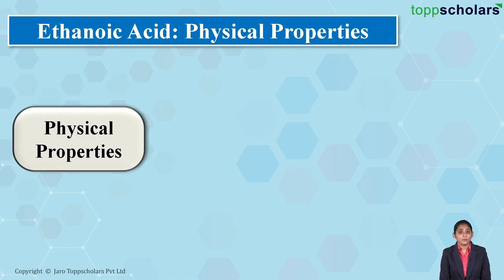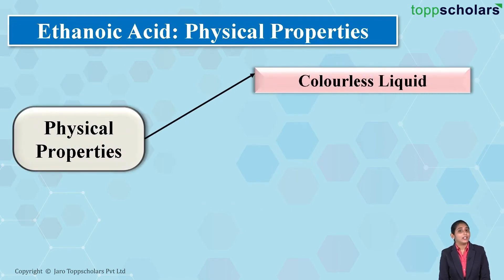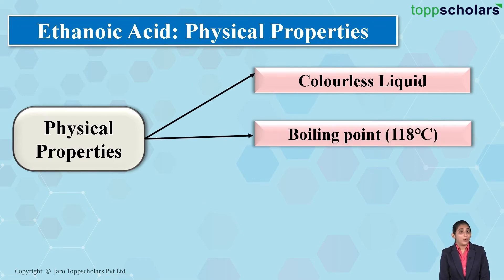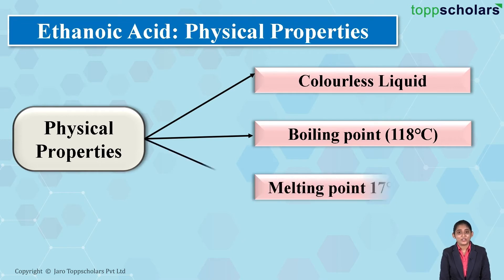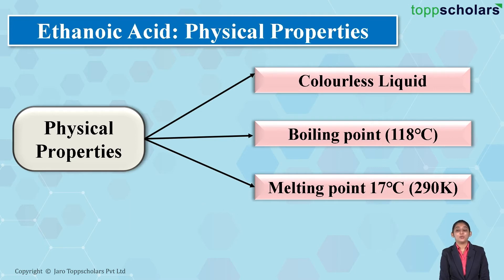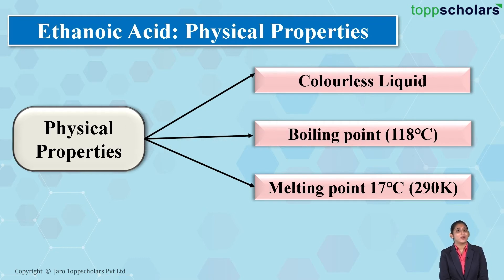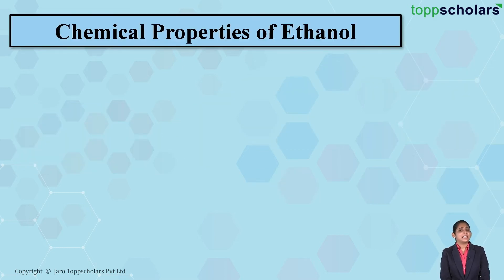Now let's discuss the physical properties of ethanoic acid. Ethanoic acid is a colorless liquid. Its boiling point is 118 degrees Celsius, and the melting point is 17 degrees Celsius, that is about 290 Kelvin. Anhydrous ethanoic acid on cooling crystallizes, and this crystalline form resembles ice — that is why it is also known as glacial acetic acid.